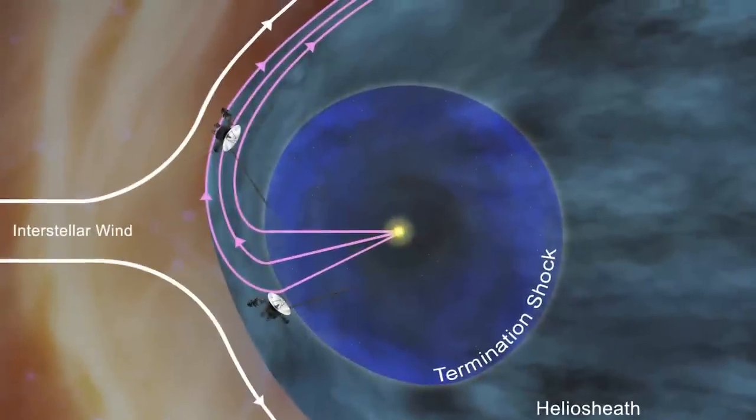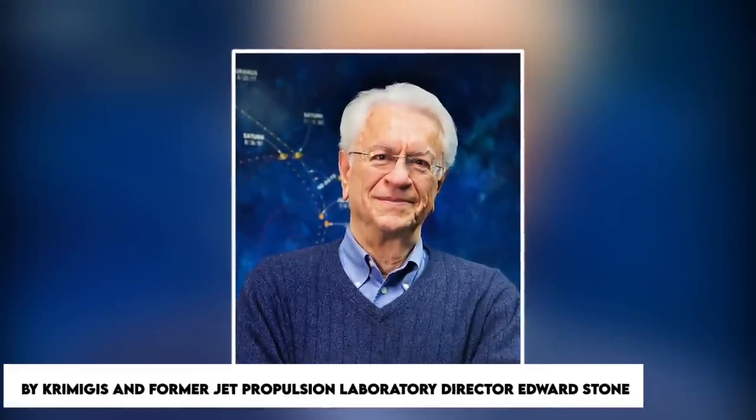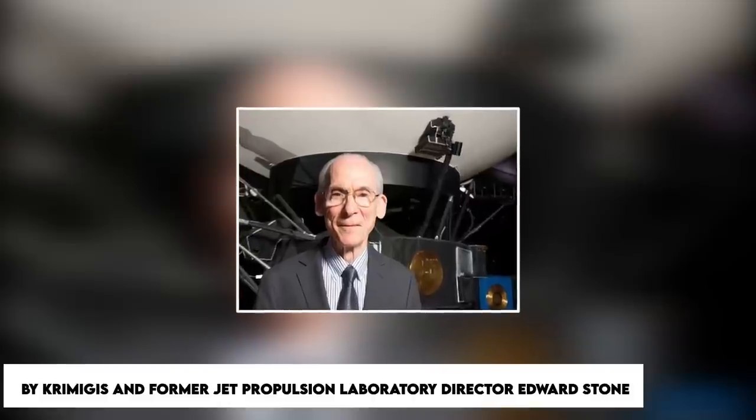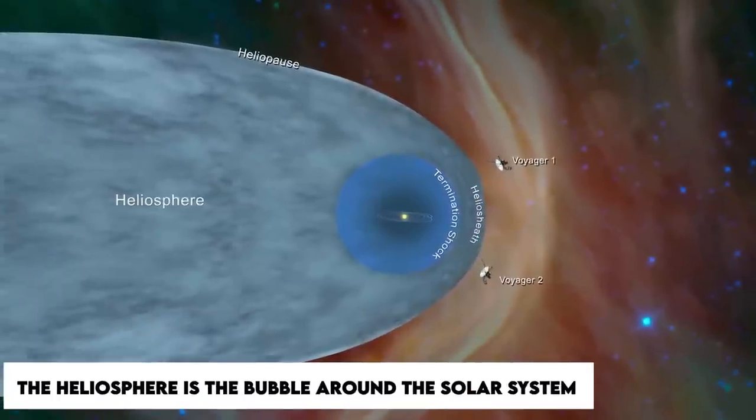The newly discovered region was described as a magnetic highway by Kermigas and former Jet Propulsion Laboratory director Edward Stone to reporters at the American Geophysical Union meeting in San Francisco. The heliosphere is the bubble around the solar system.